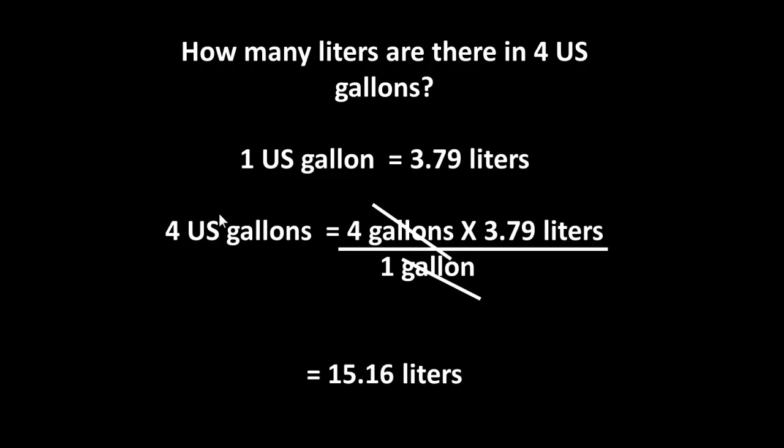So if you ask how many liters there are in so many gallons, you need to know whether it's US or imperial gallons. In this case, it's US gallons, so we know that we're dealing with 3.79 liters to the gallons, so 4 US gallons will be 4 gallons times 3.79 liters divided by 1 gallon. The units, the gallons will cross out, cancel each other out, which will leave you with an answer of 15.16 liters.